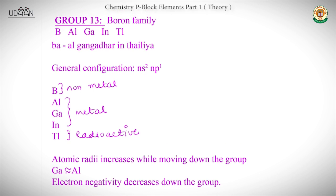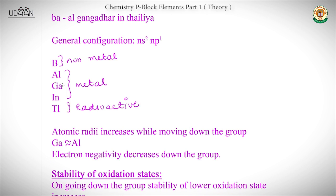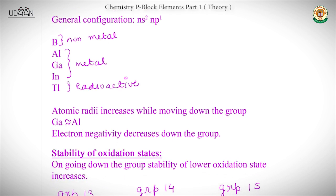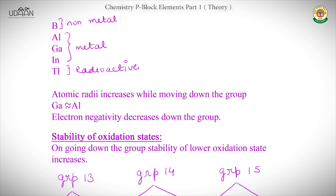The elements are Boron, Aluminium, Gallium, Indium, and Thallium. Boron is a non-metal. Aluminium, Gallium, and Indium are metals. Metallic character increases as we go down the group because atomic size also increases down the group. However, there is an exception: Gallium and Aluminium are almost the same size.